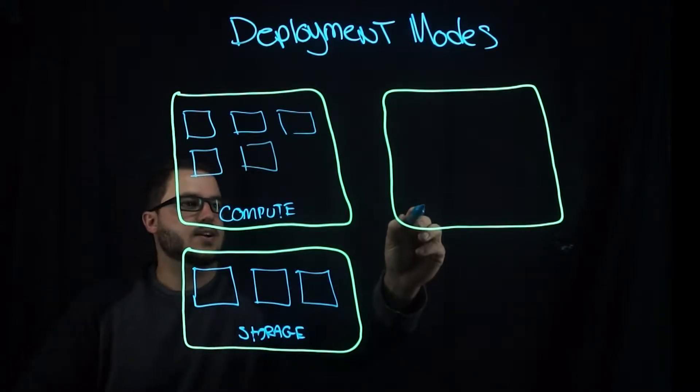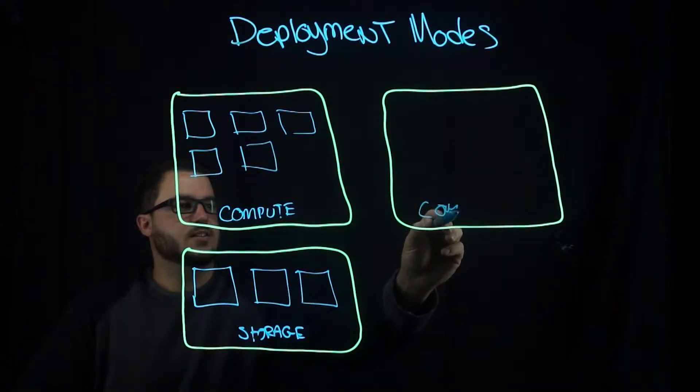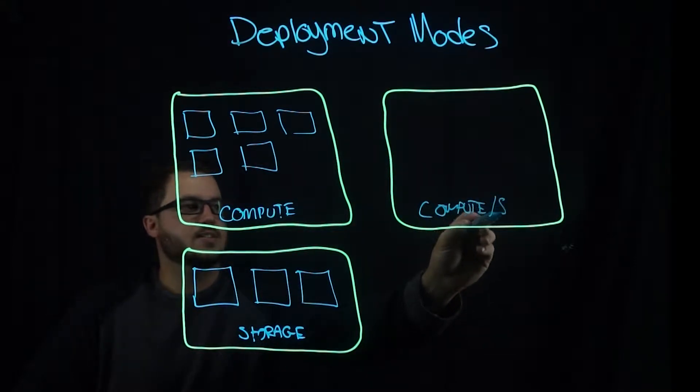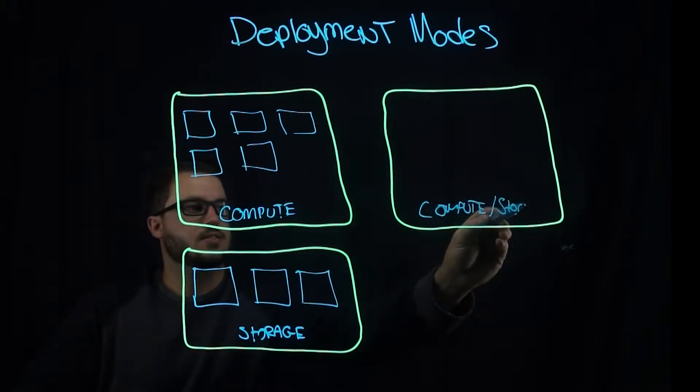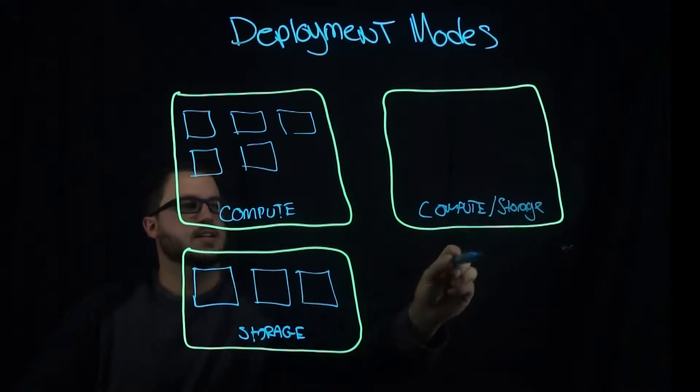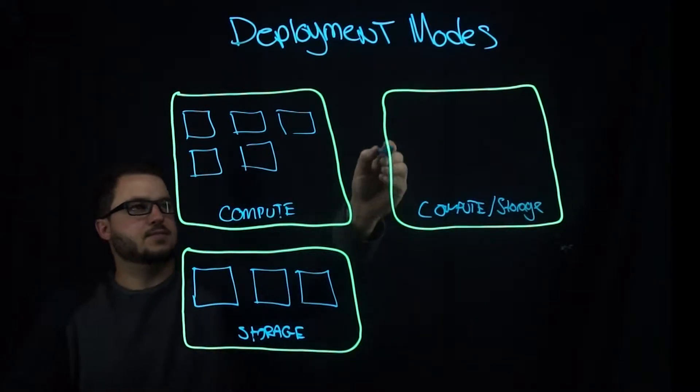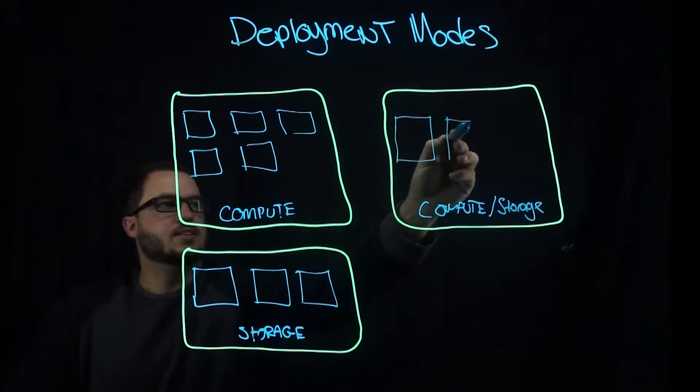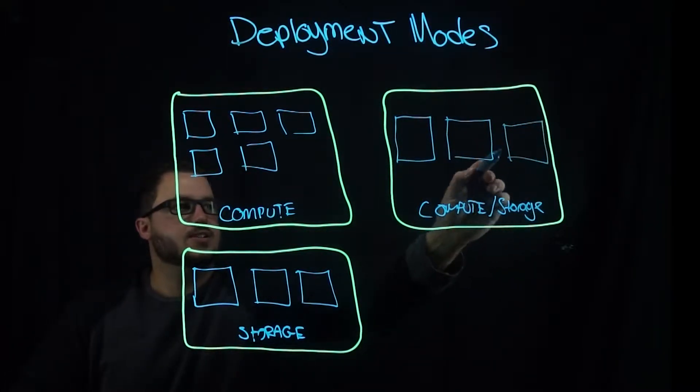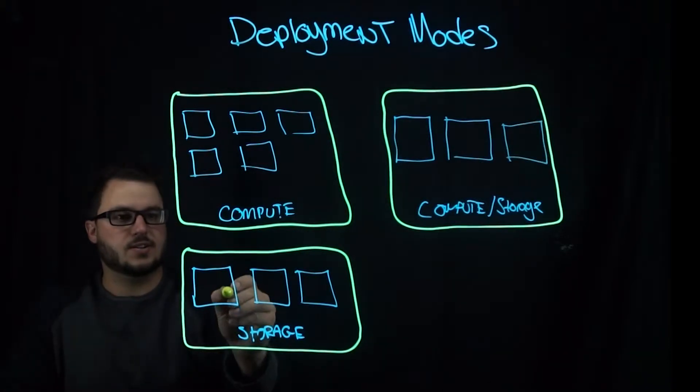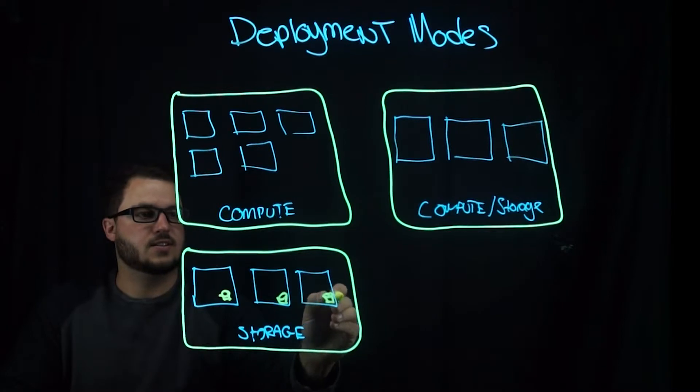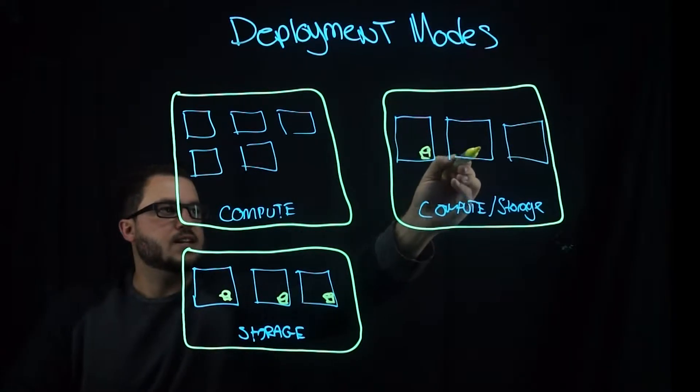Now in this case, you have compute and storage. This is called hyperconverged. Your nodes here are both compute and storage, and you'll have disks supporting both cases.